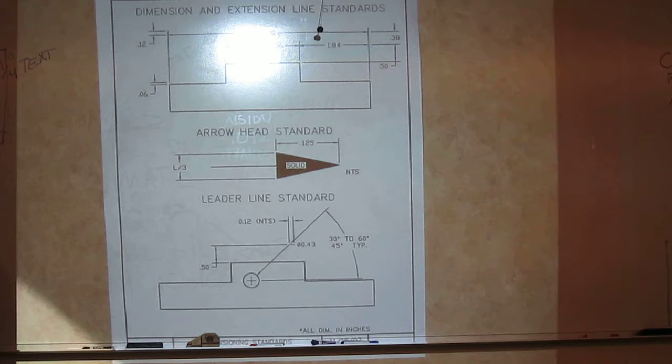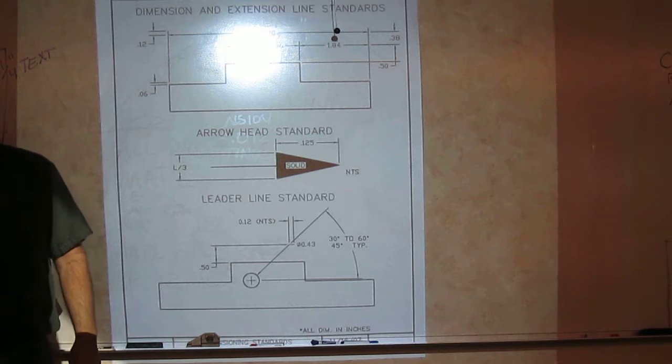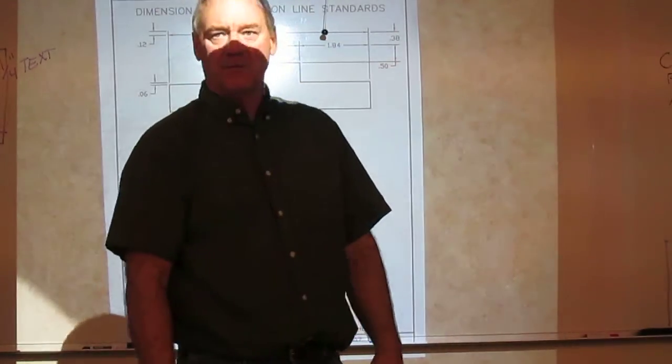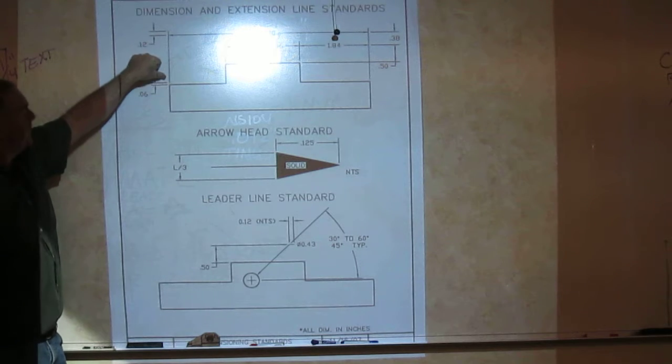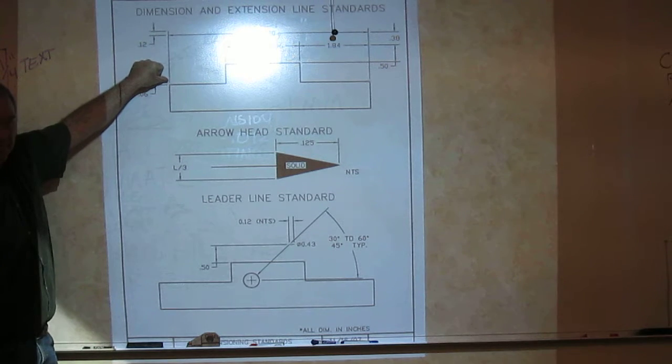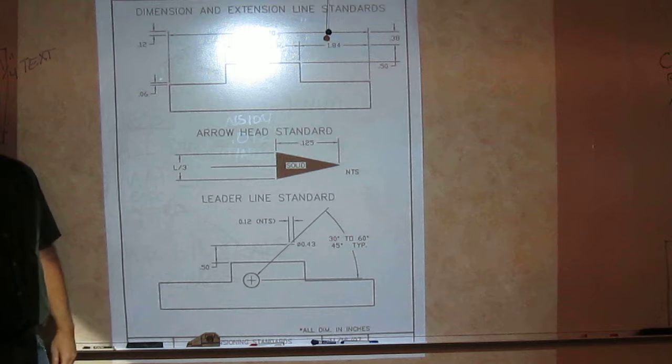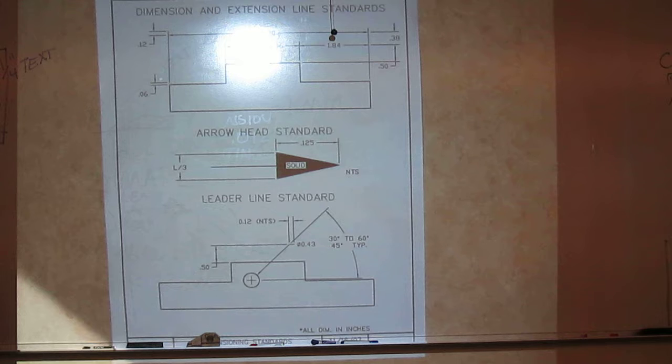Now what are these lines used for? The extension line is used to tie the dimension to the feature. That's what it's used for. It ties the dimension line to the feature. We always have a 16th inch gap from the feature to the start of our extension line. The extension line then runs up to the dimension line and goes an eighth inch past it.